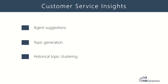I did mention a couple of these items in part one, but I certainly want to bring them up again — those are the agent suggestions. That includes agents getting similar case suggestions and knowledge articles, so they spend less time digging for the right information that could help them while working on and resolving a case. Also, AI-driven topic generation and topic clustering, as well as historical topic clustering features, have been improved and expanded upon — existing features with enhancements every release.